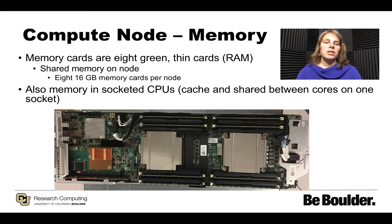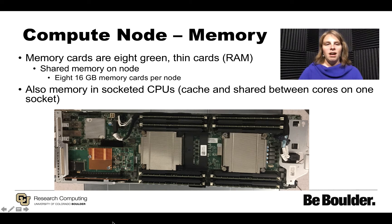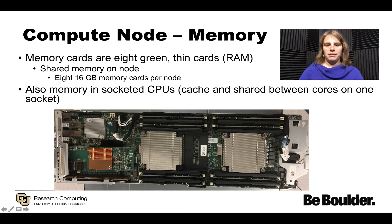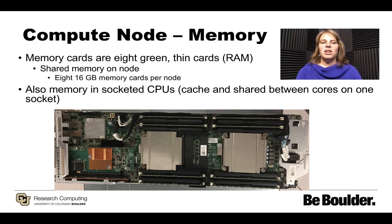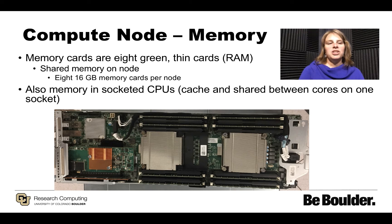Let's talk about memory. There are two types of memory on the nodes in this picture. The first is RAM — random access memory. You can see these eight green thin cards surrounded by black rectangles. What RAM memory does is share memory across one node, so across all 24 cores on the node. Each one of these memory cards is 16 gigabytes.